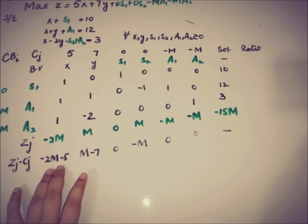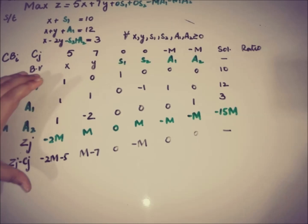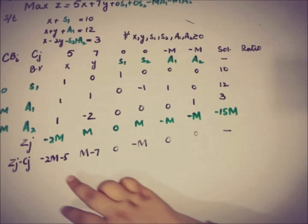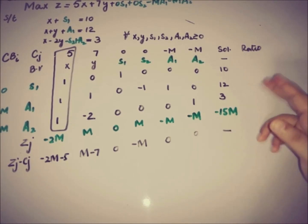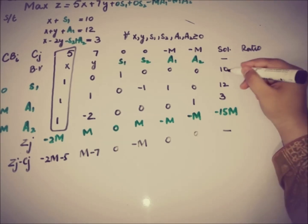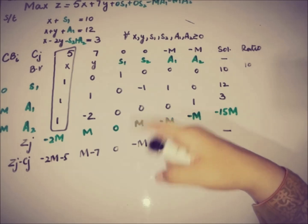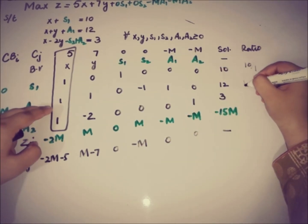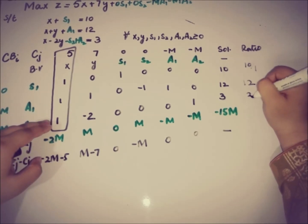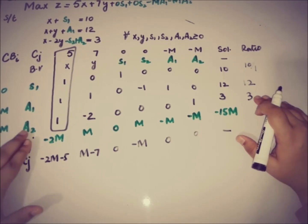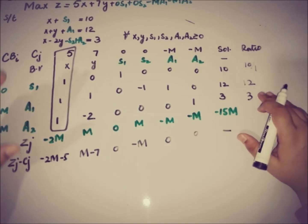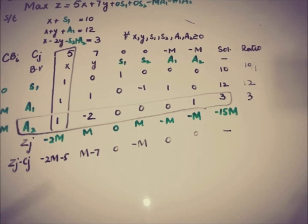So -2M - 5 is the most negative value in ZJ minus CJ, making x the entering variable and its column the pivot column. Now we determine the ratios: solution divided by the pivot column value — 10/1 = 10, 12/1 = 12, and 3/1 = 3. The minimum ratio is 3, so A2's row is the pivot row, and A2 is replaced by x. The pivot element is 1.